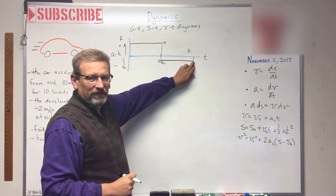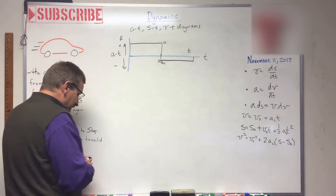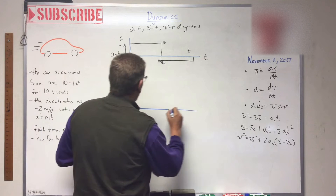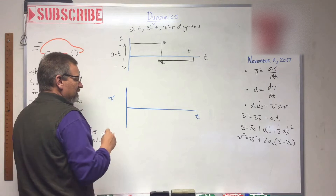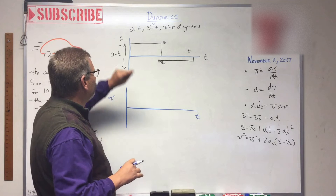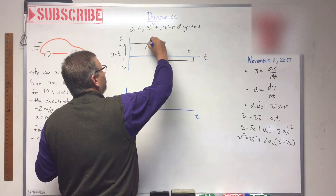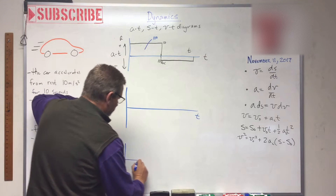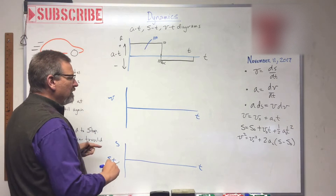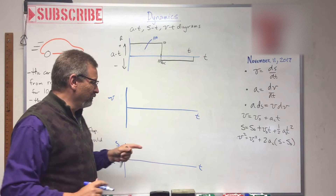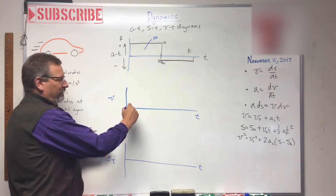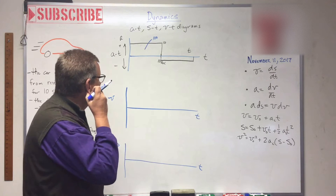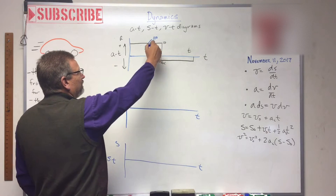Now I'm going to figure out what that unknown time is — how long it takes him to stop — and I'll show you how to do that using the velocity diagram. Here's the next diagram: the horizontal axis is time, and the vertical axis is now velocity. Remember how we did the graphic method on shear-moment diagrams, where we found the area of shapes? The first block is 10 by 10, so that's an area of 100. Acceleration, velocity, and position are all related by integrals, just like shear-moment diagrams.